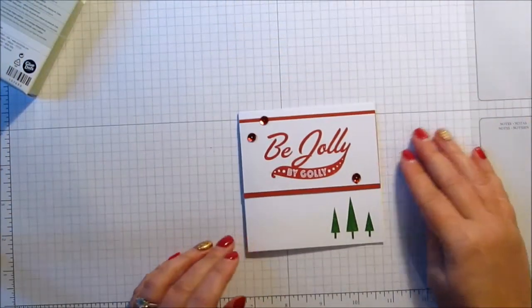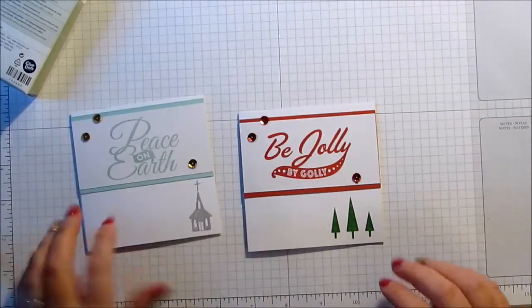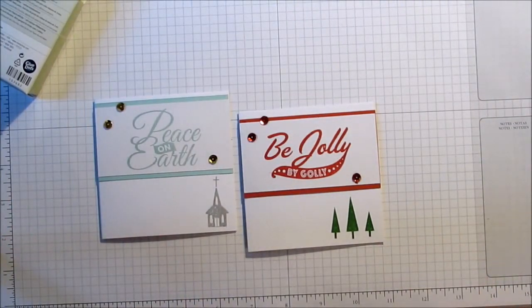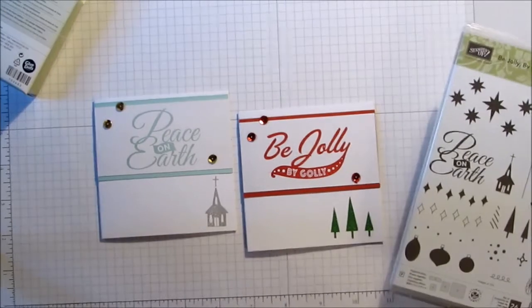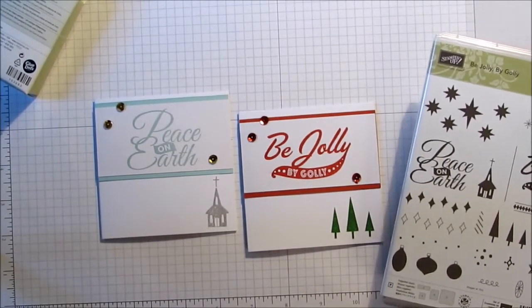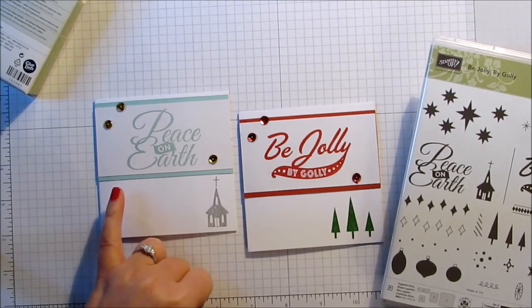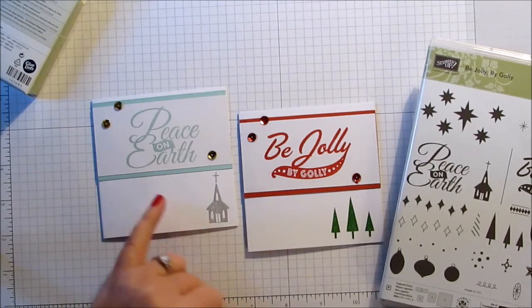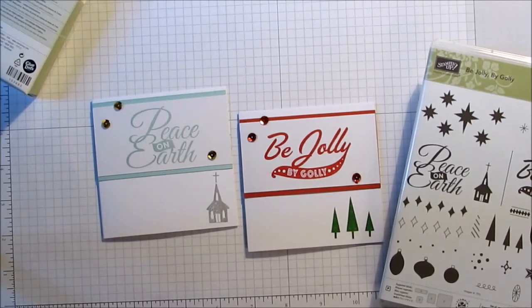And there you go. A really quick card. Great for this time of year when you've got lots to make. Especially if you like my family, you have lots of aunties, uncles and family overseas. But two different options using the one stamp set and just two different colourways. One more traditional with the real red and cucumber crush. This one was actually Smoky Slate for the church and then I used Pool Party for the card and the peace on earth.